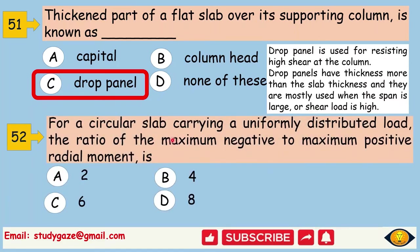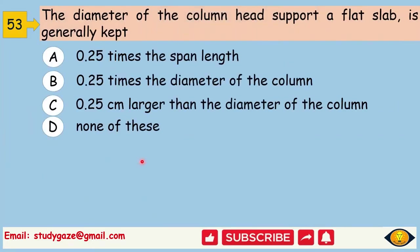For a circular slab carrying a uniformly distributed load, the ratio of the maximum negative to maximum positive radial moment is. Answer is 2. The diameter of the column head support, a flat slab, is generally kept. Answer is 0.25 times the span length.